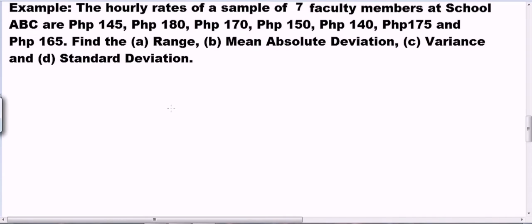So let us find the range, mean absolute deviation, variance, and standard deviation. When computing the measures of dispersion of ungrouped data, what you should do is place the values in a table so you won't get confused.